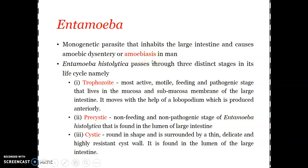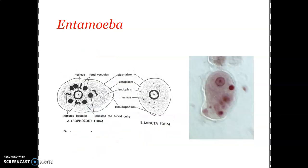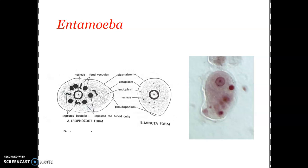Regarding structure, Entamoeba histolytica exists in two distinct forms: the trophozoite form, also referred to as the magna form, and the minuta form or pre-cystic form, which is before cyst formation. The trophozoite form is the mature parasite — the active and motile adult form. The trophozoites are large, which is why it is referred to as magna, and it is a feeding form.